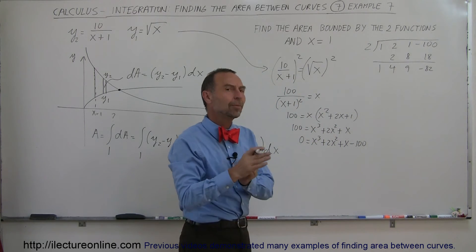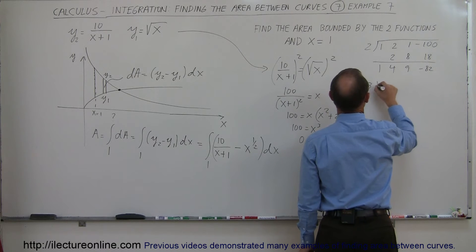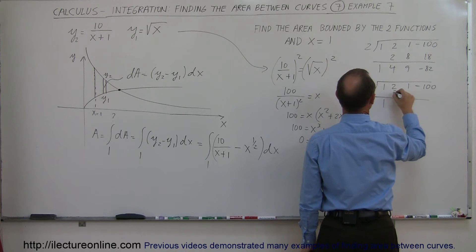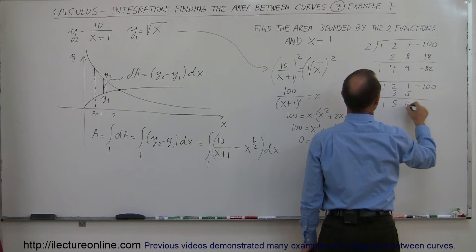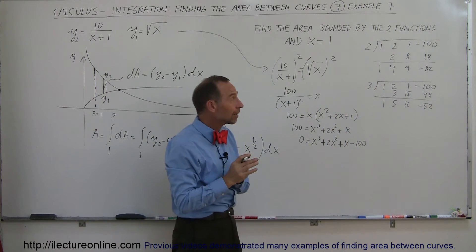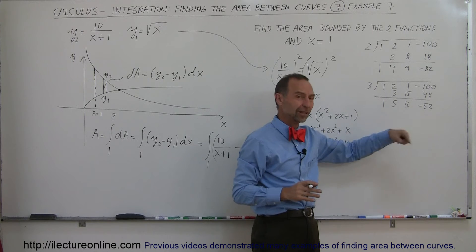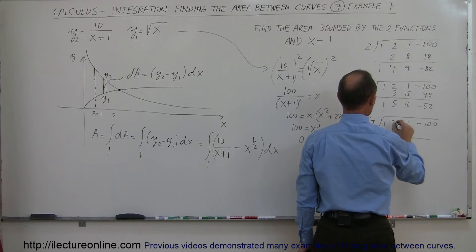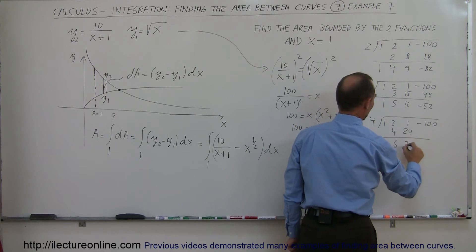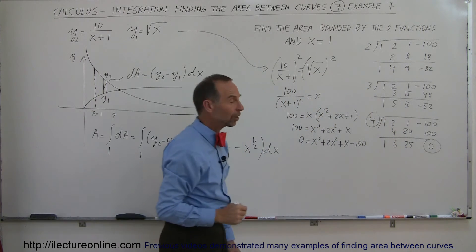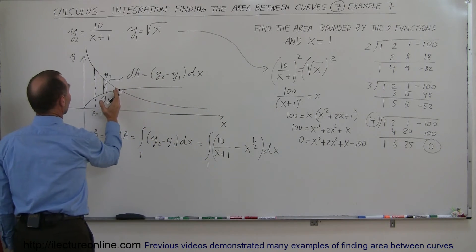No luck — let's try a bigger number, x equals 3. Coefficients: 1, 2, 1, minus 100. Drop down the 1; 3 times 1 is 3, giving 5; 3 times 5 is 15, giving 16; 3 times 16 is 48, giving minus 52. That's better but still not zero. Let's try x equals 4. Drop down the 1; 4 times 1 is 4, giving 6; 4 times 6 is 24, giving 25; 4 times 25 is 100 — and we get zero. So x equals 4 is a root.